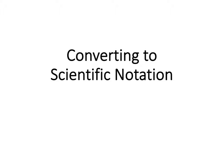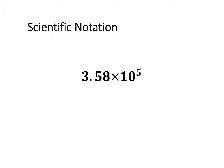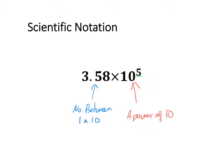In this video, we're going to have a look at how to convert from an ordinary number into scientific notation. Scientific notation is a way of writing really big numbers or really small numbers. It involves converting that number into a number between 1 and 10 and multiplying it by a power of 10. That power of 10 can either be positive or negative.